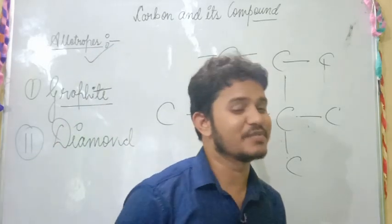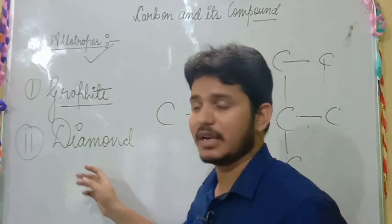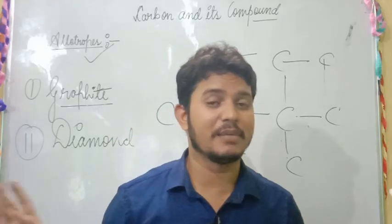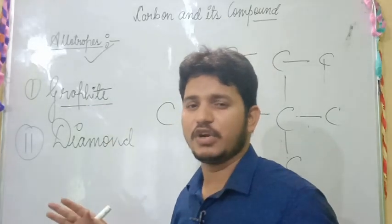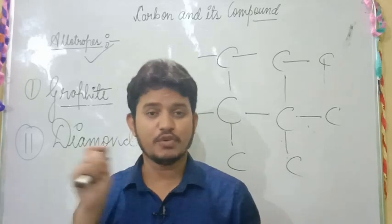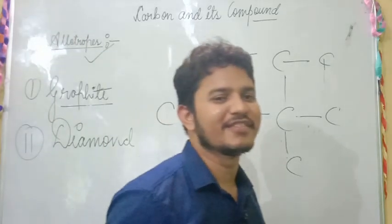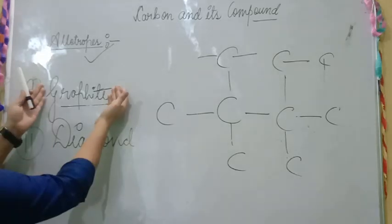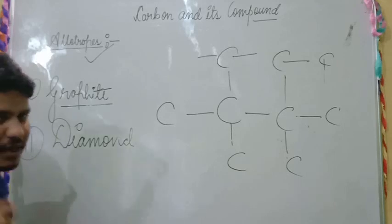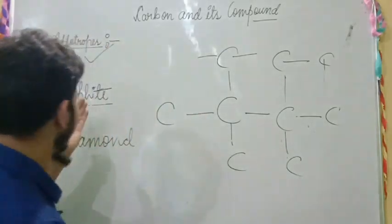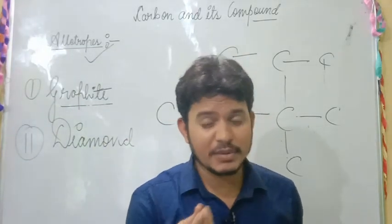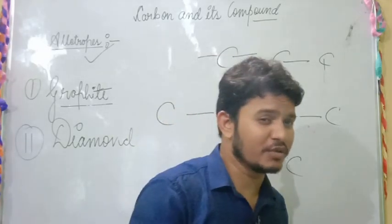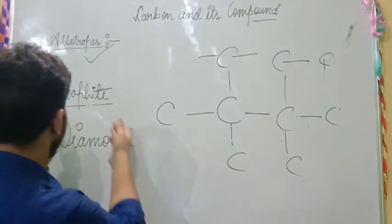But the common property is that they have the same chemical property. Whenever you try to burn graphite or diamond, they will form only CO₂. After burning, nothing is left behind, which proves that both graphite and diamond are made up of carbon. One is a poor conductor and one is a good conductor; one is soft and the other is hard. For the uses of graphite: it is used as a lubricant because it is very smooth and slippery. It is used wherever friction needs to be reduced in machinery parts.